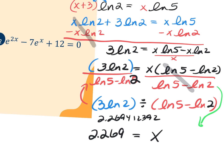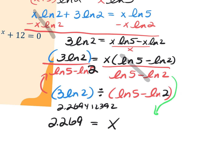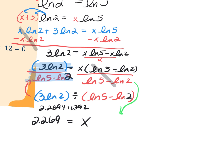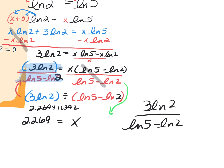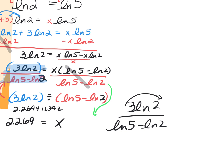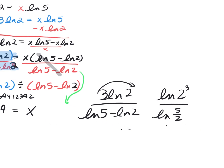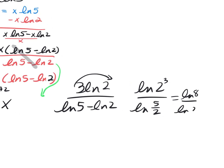Another approach at this step: you could condense 3 ln 2 over ln 5 minus ln 2 by pulling the power back to get ln of 2 to the third over ln of 5 divided by 2. That simplifies to ln of 8 over ln of 2.5. You can evaluate it this way on your calculator — this is where condensing can help you out.